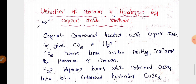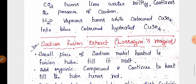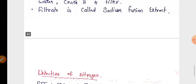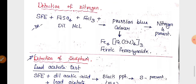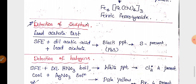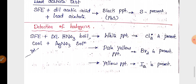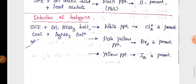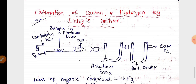Detection of carbon and hydrogen by the copper oxide method is a two-mark question. A three-mark question is the preparation of sodium fusion extract (Lassaigne's reagent). Detection of nitrogen, detection of sulfur, and detection of halogen — any one of these three is very important for two or three marks.